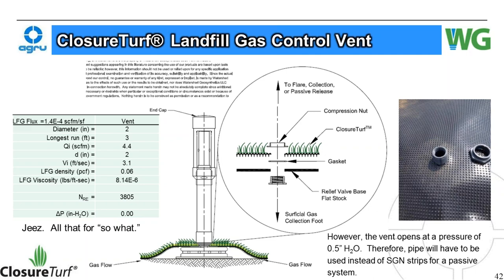One important caveat: if you use a vent with backflow prevention, it opens at a pressure of 0.5 inches of water column. Therefore, you'll need to use pipe everywhere rather than Super Grip Net strips for gas conveyance in a passive system to keep pressure beneath the geomembrane from getting too high. On the other hand, if you're below local air quality requirements and can freely passively vent, you don't need backflow prevention — most existing vents out there are free-flowing. That's an important design consideration.